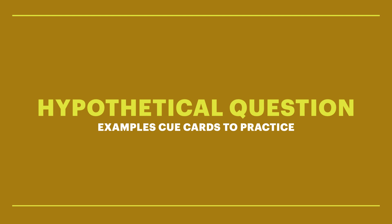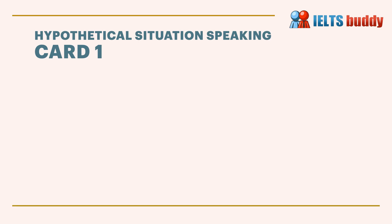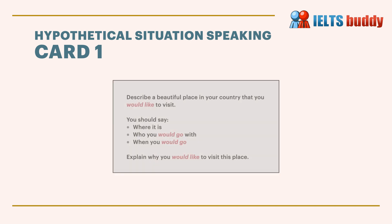Let's look at some hypothetical example cue cards, so you can see what kind of things might come up that signal a hypothetical situation. Here's one example: 'Describe a beautiful place in your country that you would like to visit.' You should say where it is, who you would go with, when you would go, and explain why you would like to visit this place.